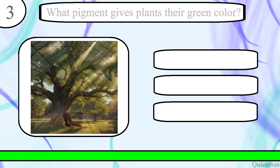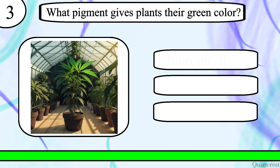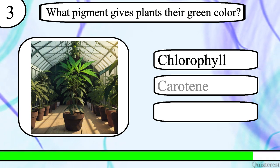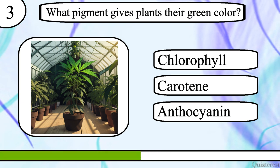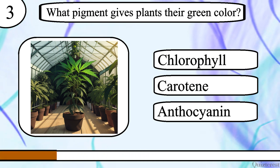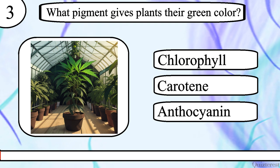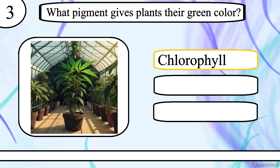Question 3. What pigment gives plants their green colour? Chlorophyll, carotene or anthocyanin? The correct answer is chlorophyll.